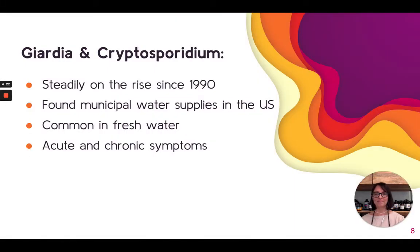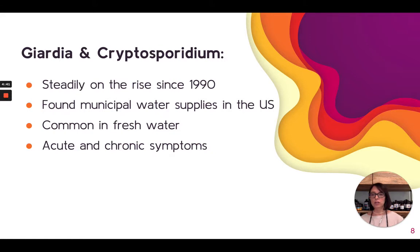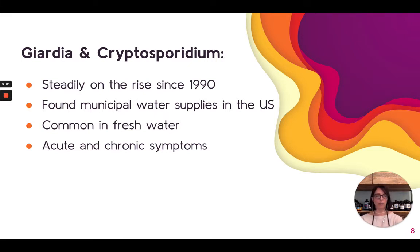Giardia and Cryptosporidium — a lot of people think this is just an acute thing: you drink out of a stream while camping, get diarrhea, it goes away in a couple of days. That's true, but this can also become chronic, especially if the gut terrain is already a little out of balance. These bugs will stay at lower levels and cause slow, accumulative problems over time. In the United States, it's been steadily on the rise since 1990. It's found in municipal water supplies all over the U.S. with common outbreaks — even treated water. It's common in all bodies of fresh water, coming from animals that urinate or defecate in the water. Don't forget there is a chronic component to this.